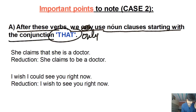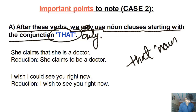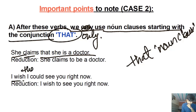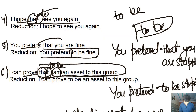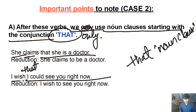Important point: After these verbs, we only use noun clauses starting with the conjunction 'that.' The conjunction 'that' can be omitted. For example: 'I hope that I see you again' → 'I hope I see you again.' 'She claims that she's a doctor' → 'She claims she's a doctor.' 'I can prove that I am an asset to this group' → 'I can prove I am an asset to this group.'